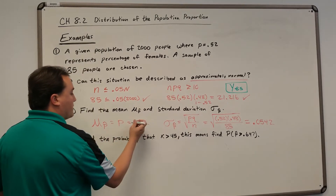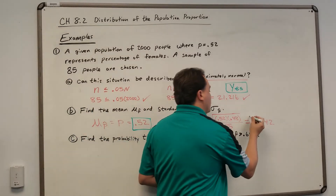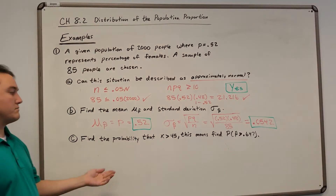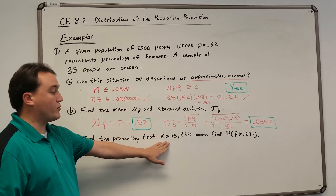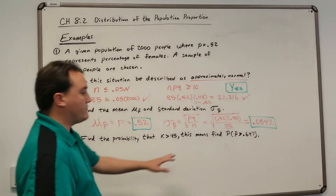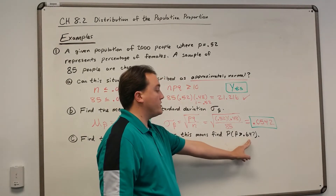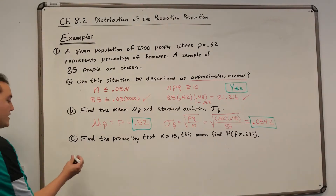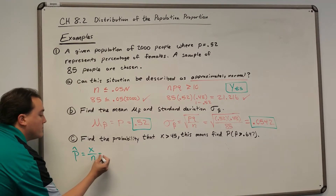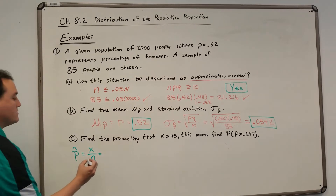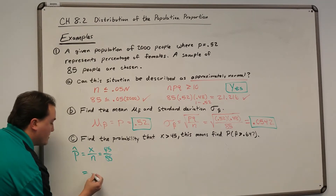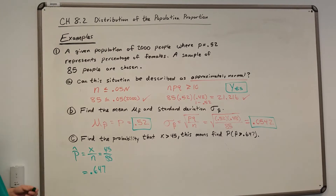Now we want to find the probability that X is greater than 45 in this sample of 85 people, meaning the probability that more than 45 people are female. The problem says find this where P-hat is greater than 0.647. To find P-hat, you take X divided by N, which is 45 divided by 85, and that gives us the 0.647 we were given. For future reference, that's how you find it.